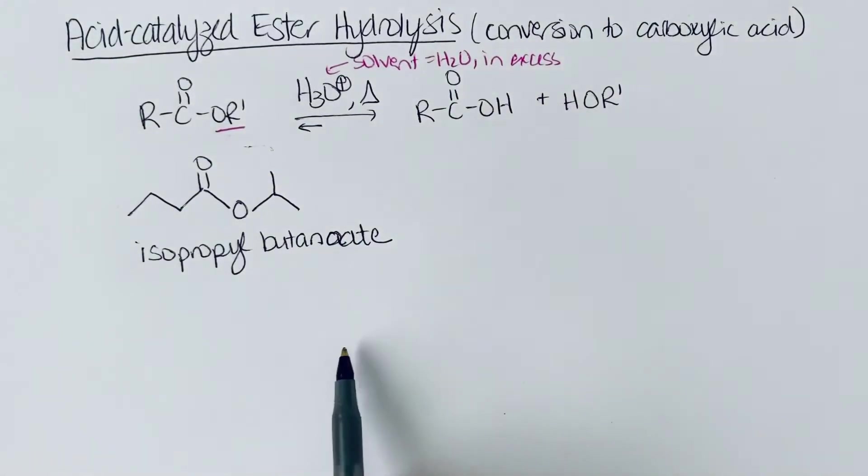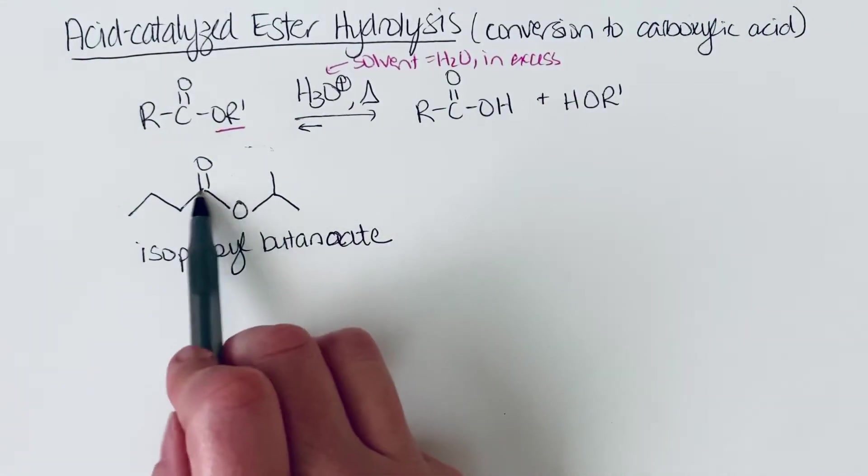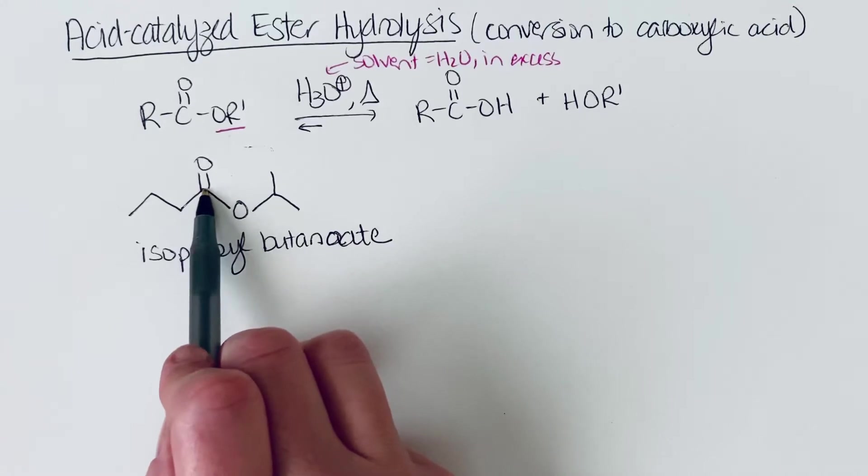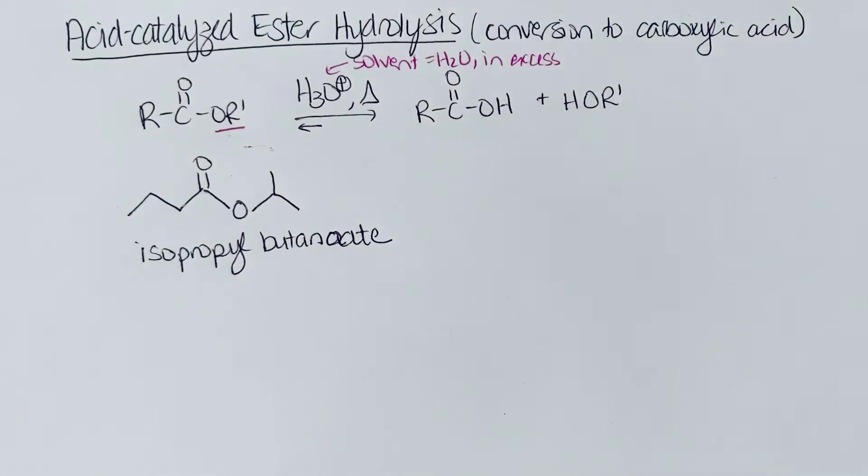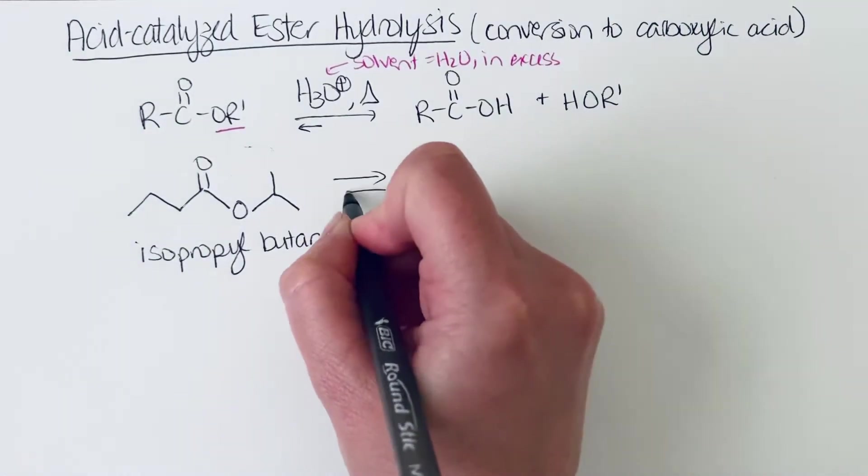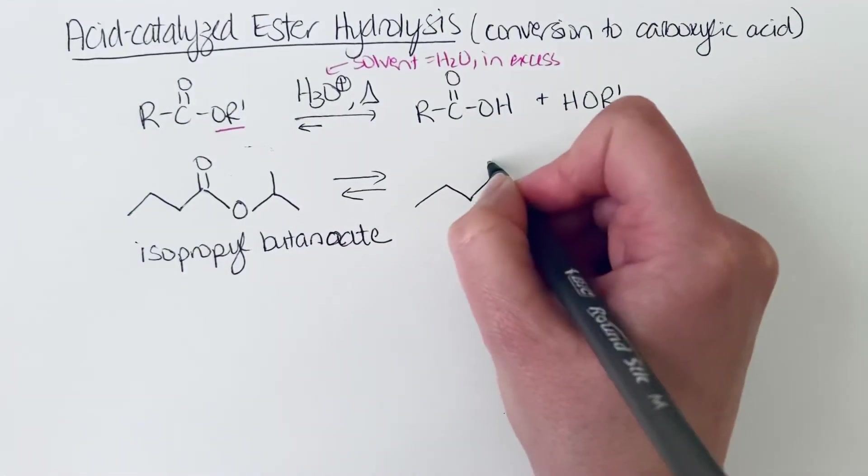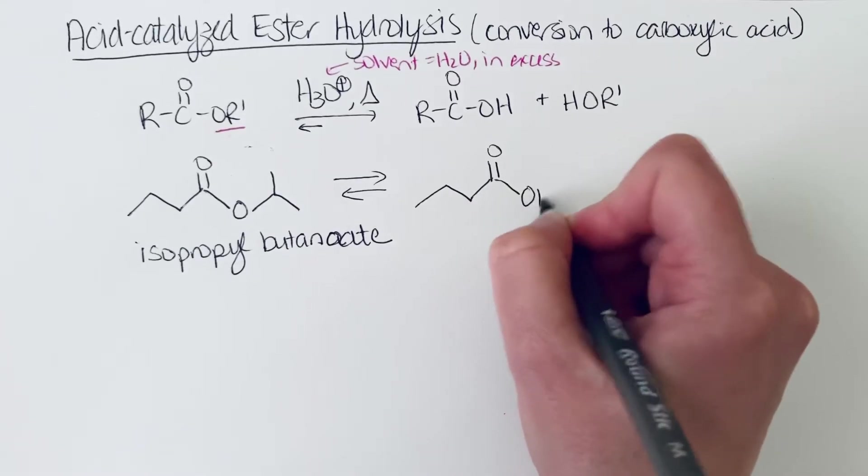And so whenever you do a hydrolysis of an ester, the carbonyl, that's where you're going to end up adding water. So the water that gets added comes from the solvent, and you're going to lose your OR group as an alcohol. So when you do this reaction, you would get the butanoic acid.